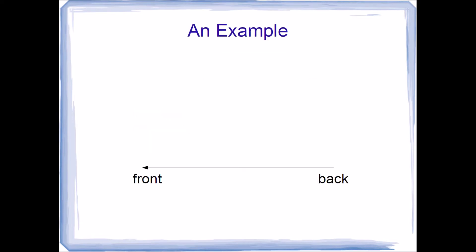Here's a quick example. We have a queue where the front is towards the left and the back is towards the right. All values added are added towards the right, and all values removed are removed from the left. If we perform an enqueue operation, assuming there's room, we place 8 into our empty queue. Another enqueue places 6 behind 8 — front is 8, back is 6. Enqueuing again places 7 behind 6, and one last enqueue places 5 behind 7. All values being added go to the right end of the array.